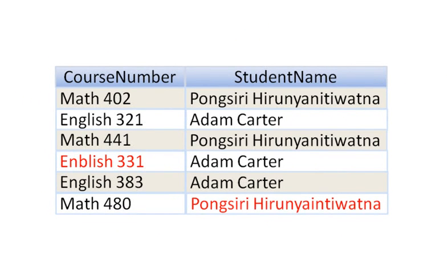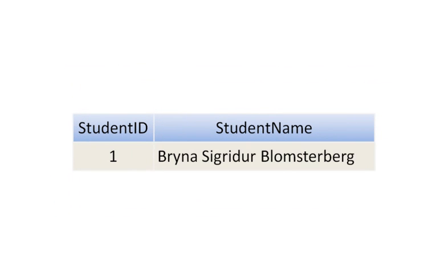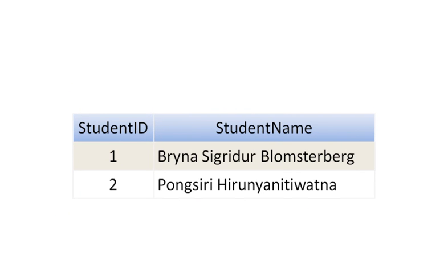Here, if I were to use just one table, you can see how I could misspell a student's name. In the last record, an N and an I are transposed. I can ensure accuracy by entering data that's used multiple times just once, as a single record in one table, and then relating that record to records in other tables. Once I've entered these names, I'll probably never have to type them again.